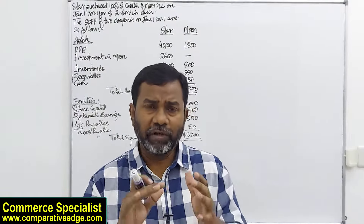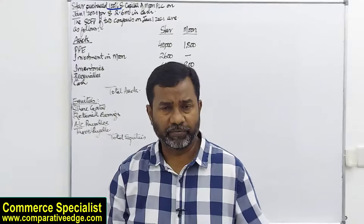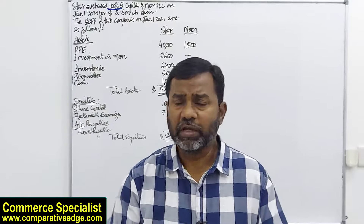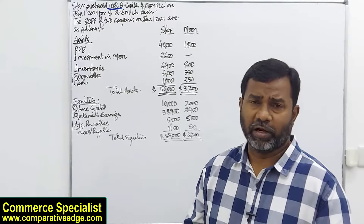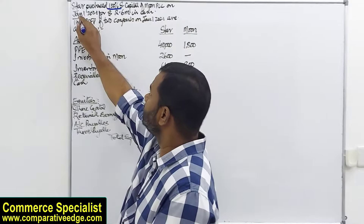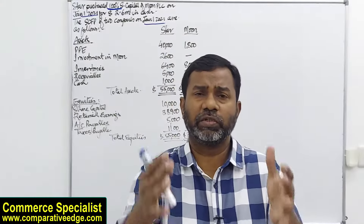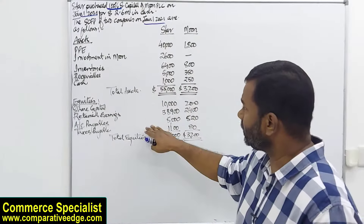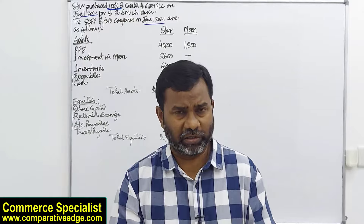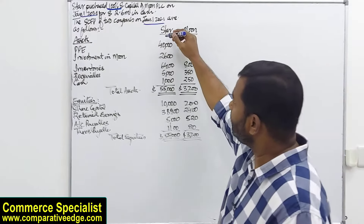The first thing to look at in any question is the percentage of investment — here it is 100 percent. The date of acquisition, meaning the date of purchase of shares, is January 1st. The financial statements given are also for January, meaning they are on the same date as the acquisition. If you look carefully, three zeros are eliminated throughout, so these are amounts in thousands.